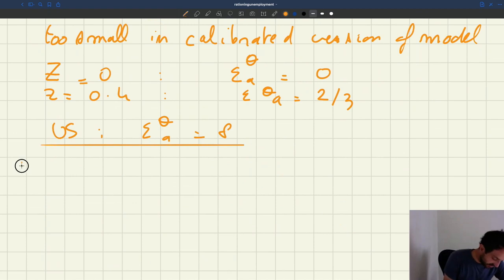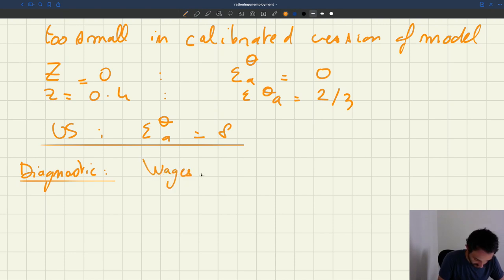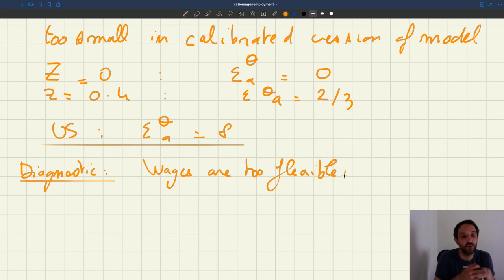And so the diagnostic, the issue here, is that wages are too flexible. And so what that means is that they absorb too much of the fluctuations in productivity. When productivity goes up, which would normally stimulate firms to hire more workers because that boosts their profitability, wages go up too much and so they absorb too much of that increased profitability. And at the end, firms don't really have a big incentive to hire more.